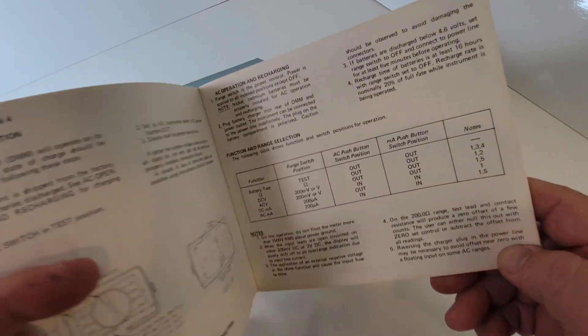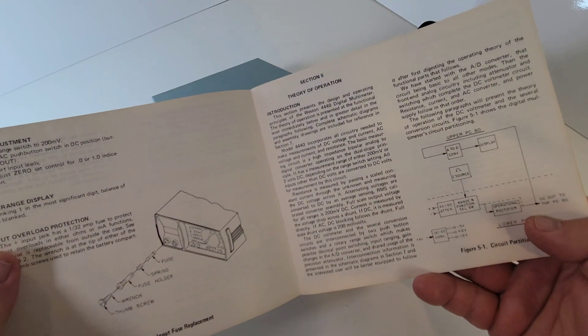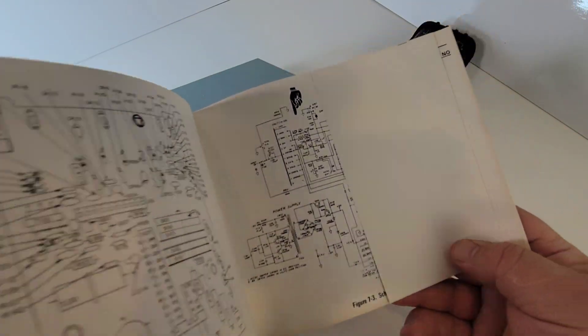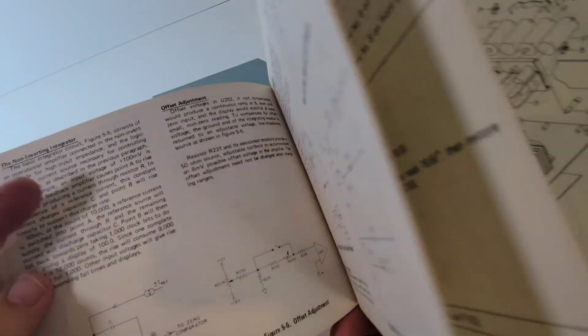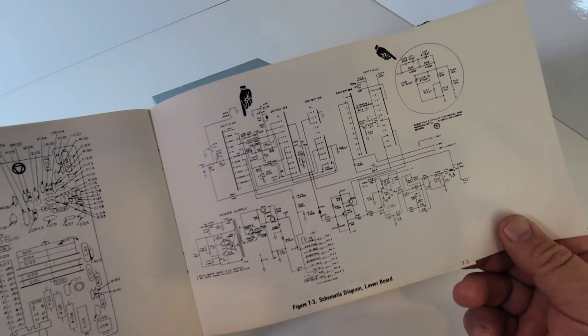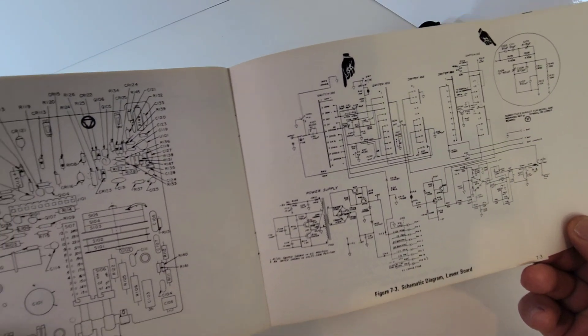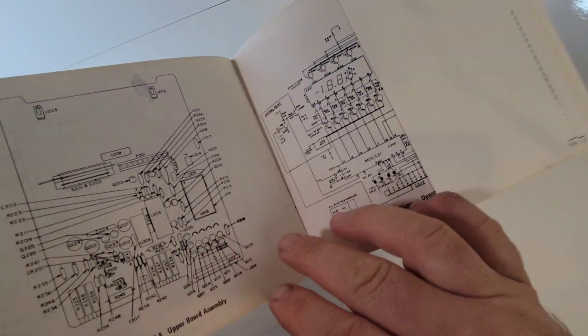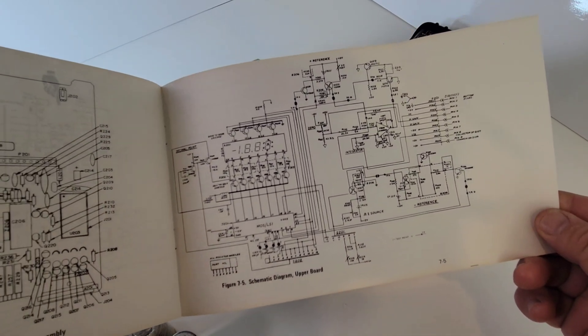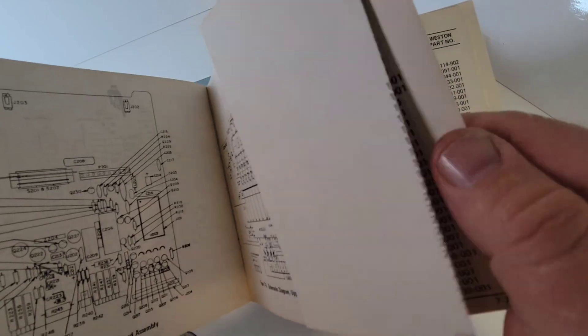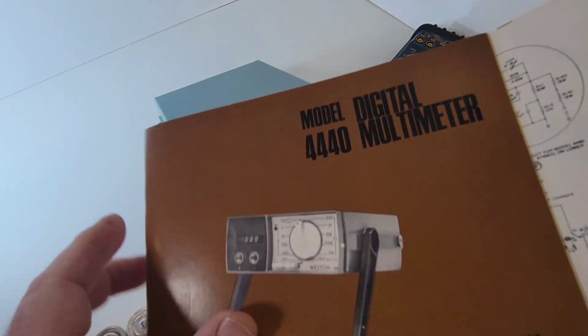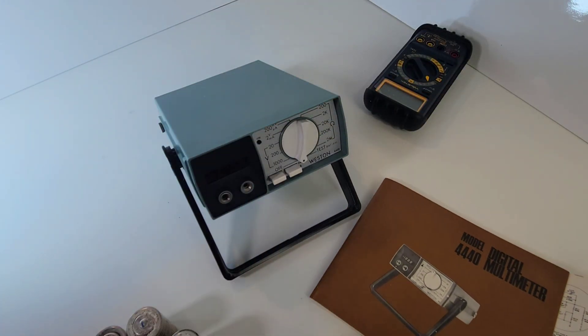Front view, back view, the whole nine yards. I swear to God, I could do a review just on the meter manual itself. And of course. Look at that. Look at the schematic they're giving you, a pullout schematic. Lower board assembly, flip it over the upper board assembly, schematic diagrams, the whole nine yards. Schlumberger, Weston, we love you.